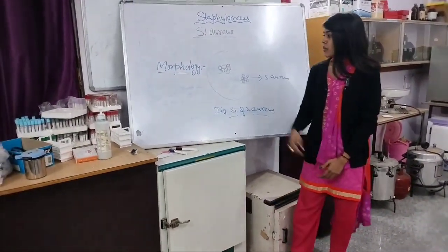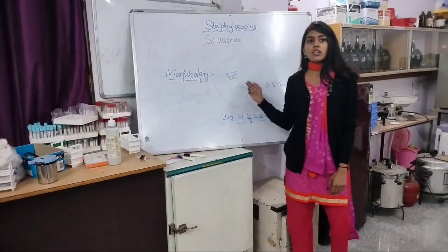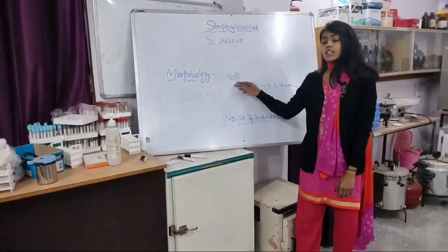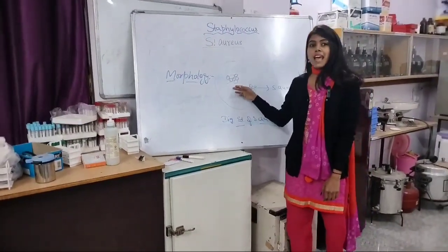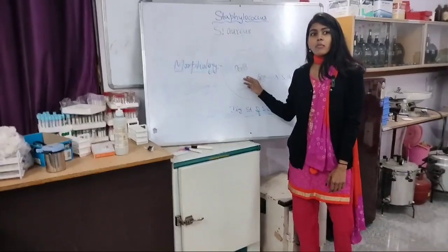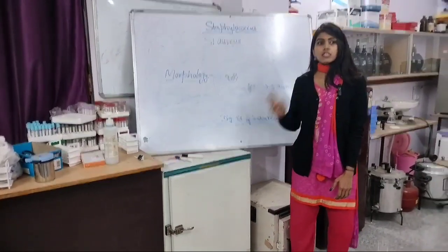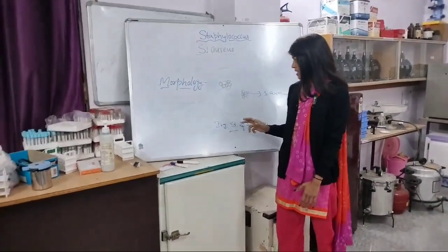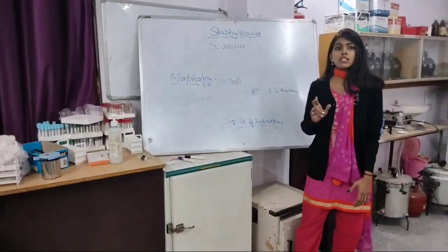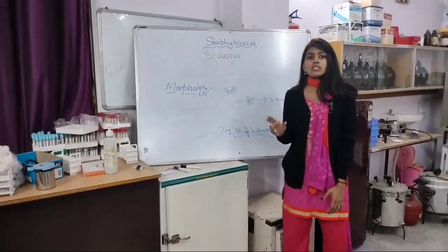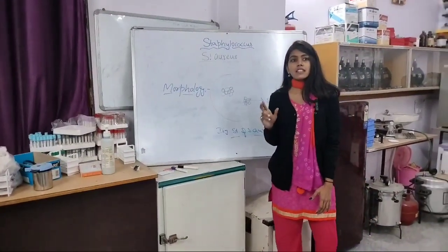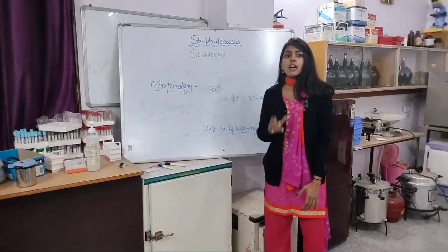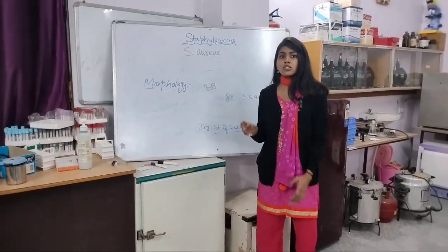Firstly I'm going to talk about the morphology of Staphylococcus aureus, which is represented in a cluster form and it is non-motile, non-sporing form of bacteria, which is mainly responsible for pathogenesis and disease for skin lesions and pus formation, abscess formation.